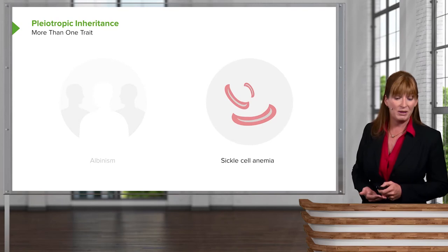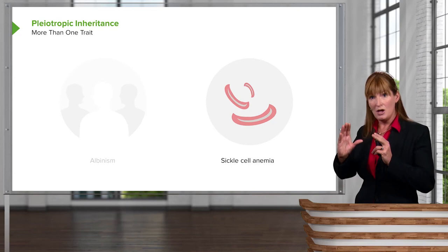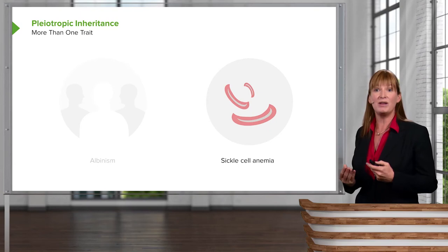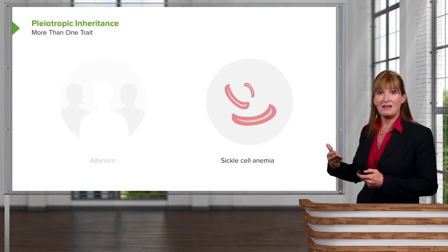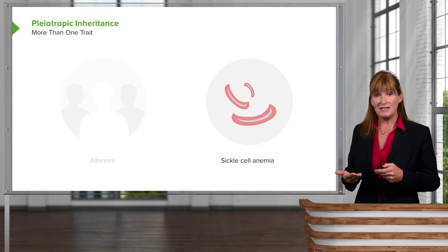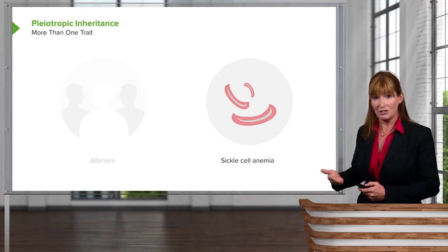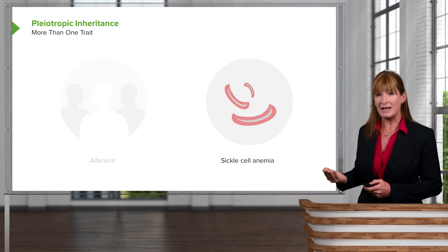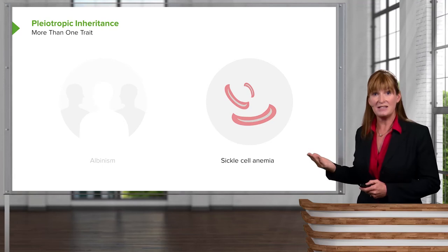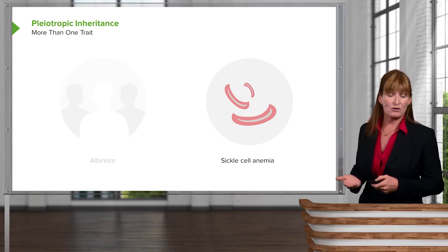Sickle cell anemia is a great example of pleiotropic inheritance. It results from a mutation in the beta subunits of hemoglobin. When the mutant hemoglobin stacks up inside the red blood cell, not only does it fail to carry oxygen, but it causes a sickling of the cell. That sickled cell tends to get stuck in smaller blood vessels, producing multiple circulatory phenotypes. Later, we'll understand that it is just one tiny base change in the DNA that causes these multiple pleiotropic effects.